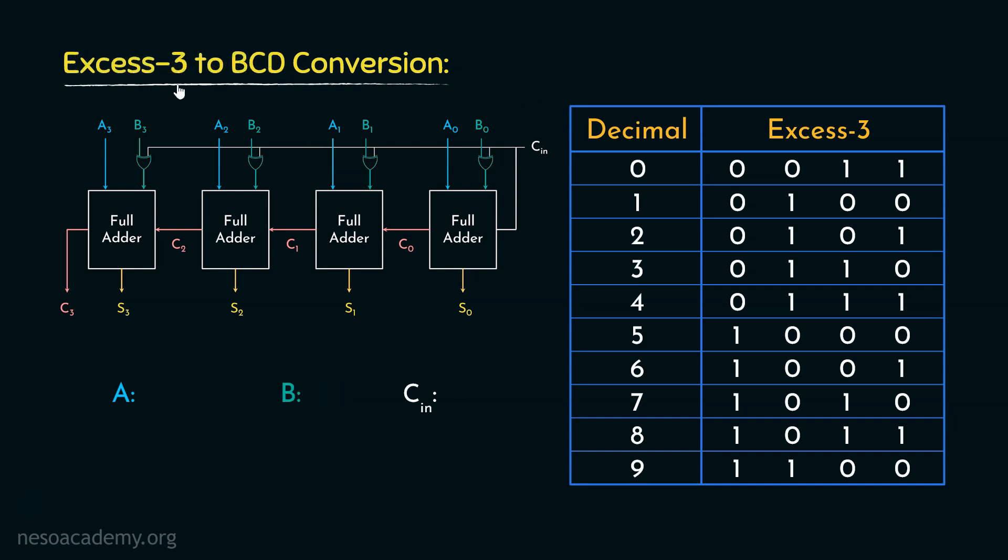Let's now move on to the XS3 to BCD conversion. Now, any XS3 value can be converted into BCD if we subtract 3 from that particular XS3 value. Isn't it? Therefore, this time, through A, we will feed the XS3 value and through B, we will feed 0011. Now, we need to perform the subtraction in here. Therefore, we need this circuit to work as a subtractor. And for that to happen, through CN, we will feed in 1. So, with this particular combination, we can convert any XS3 value to its equivalent BCD.